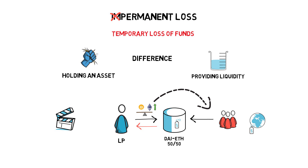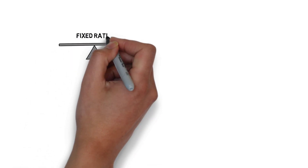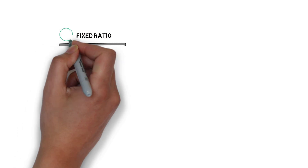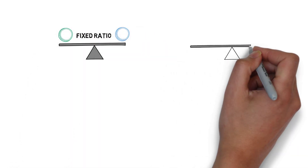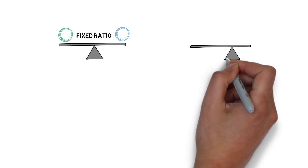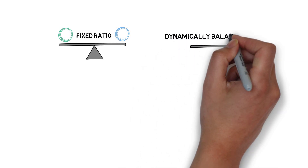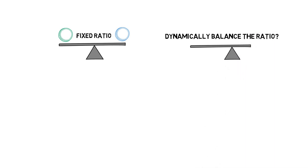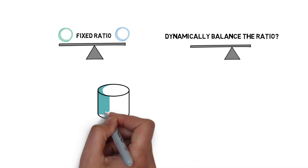We can see that the main driver for impermanent loss is the fixed ratio between the tokens. But what if we didn't have to always rely on a fixed ratio between the tokens in the pool? What if we could dynamically balance the ratio of the tokens in a pool? This is where DAMM comes into play.